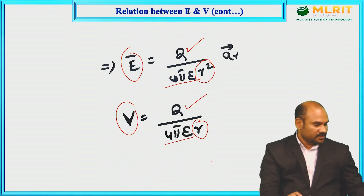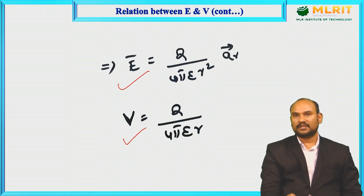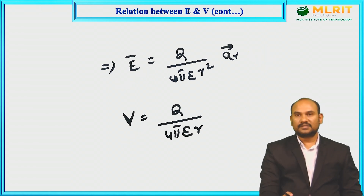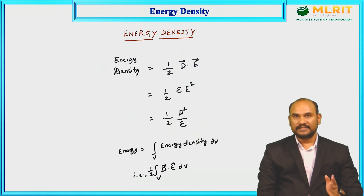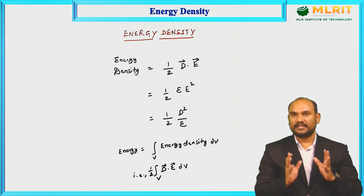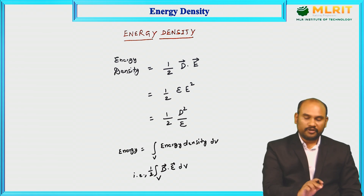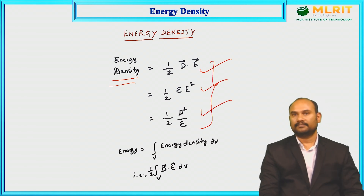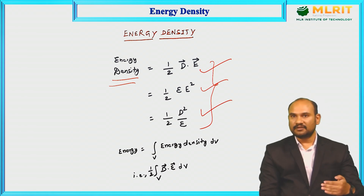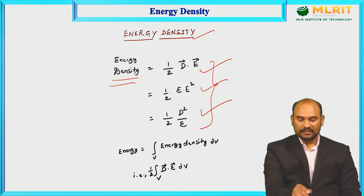These are the expressions for electric field and electric potential. The unit of electric potential is volt. The unit of electric field is volt per meter. Next, we move on to an associated topic which is known as electric energy density. The expressions for energy density can be written in three different ways — all are the same thing expressed differently.